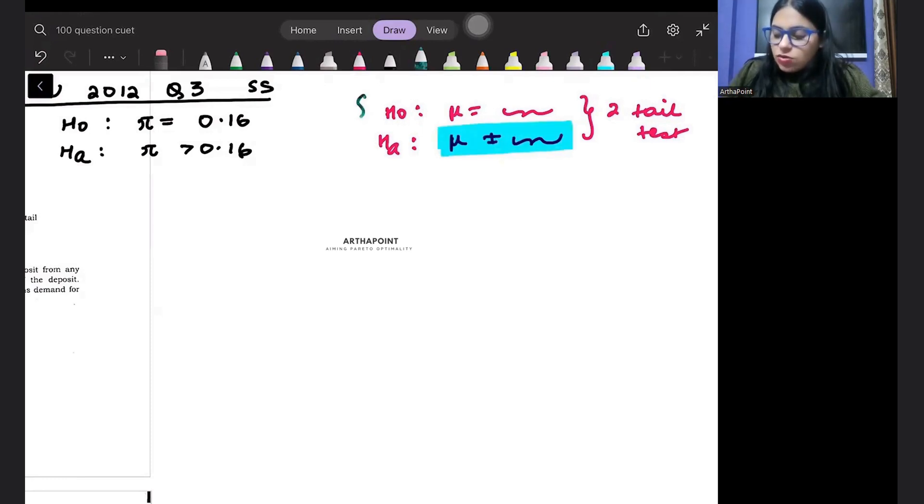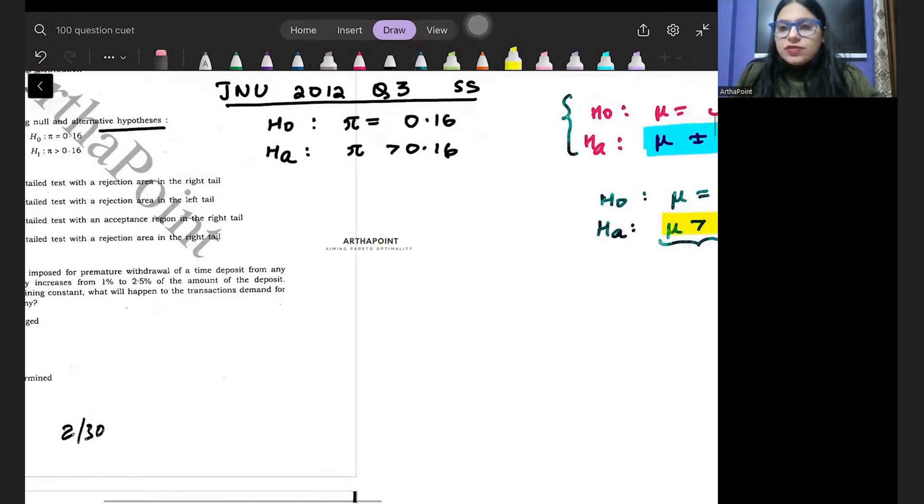Now when we talk about a one-tailed test, what will happen? Null will be μ is equal to something and alternative will be μ either greater than something or μ less than something. So, when the direction will be given to you, if you have a direction given to you, then that is going to be a one-tailed test.